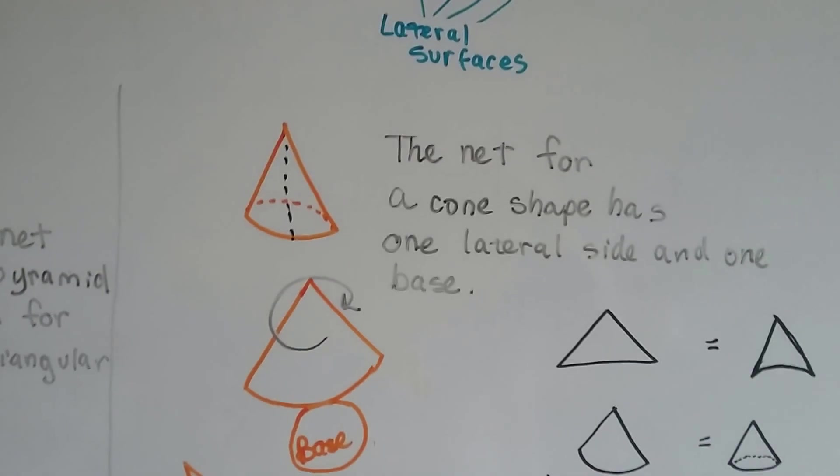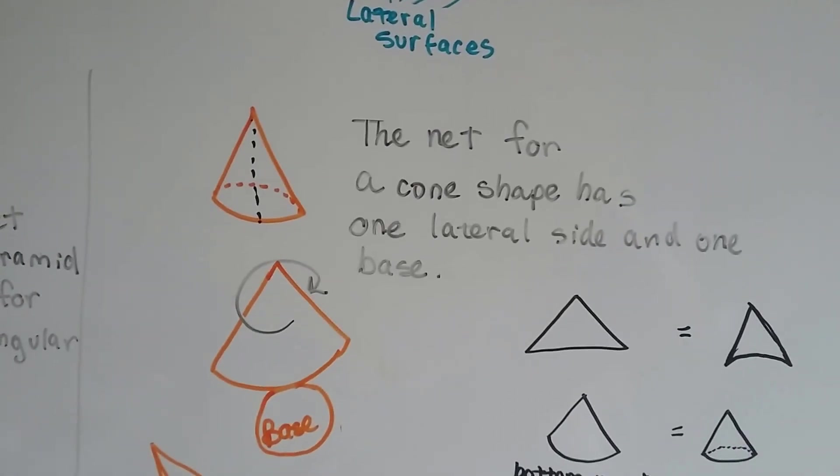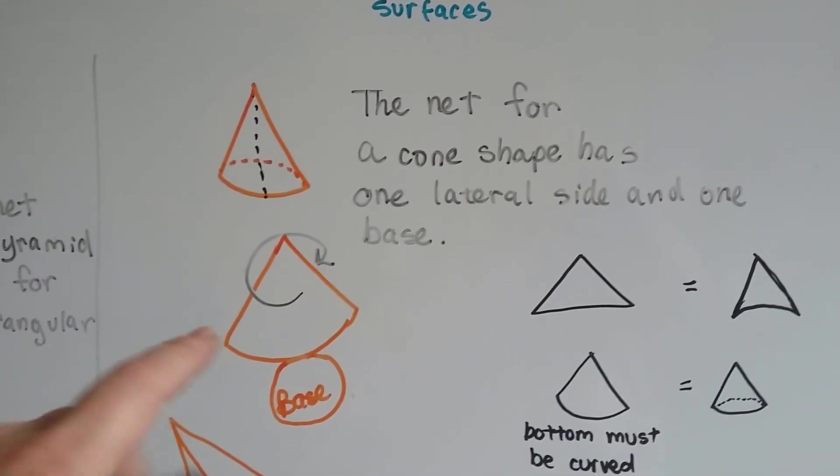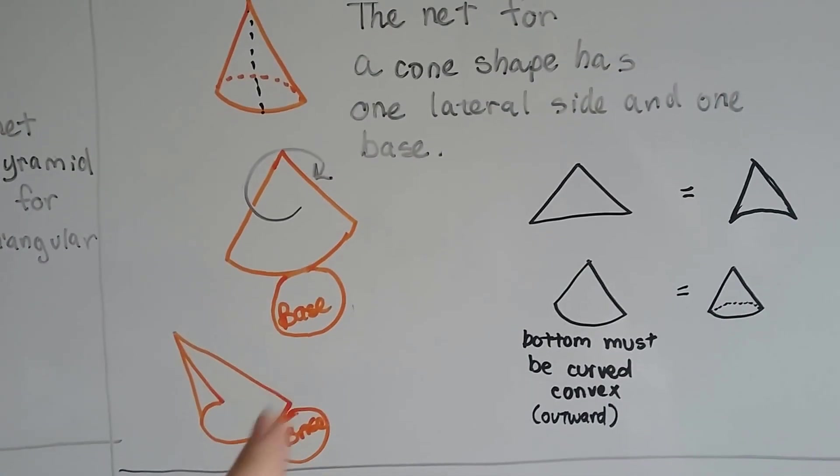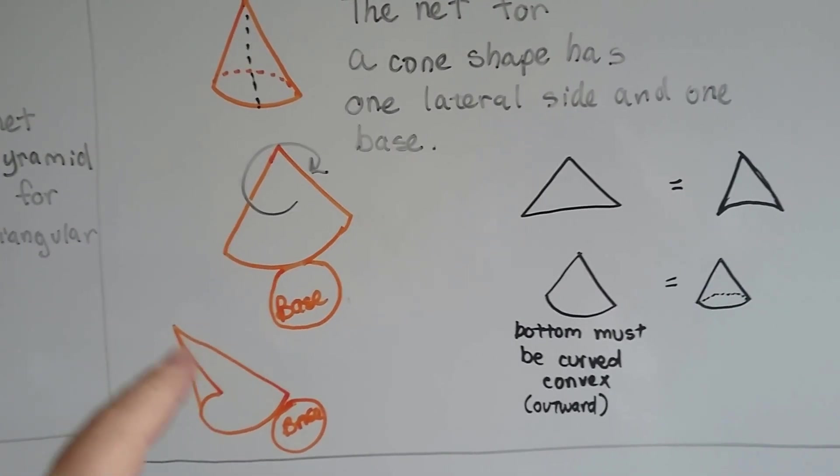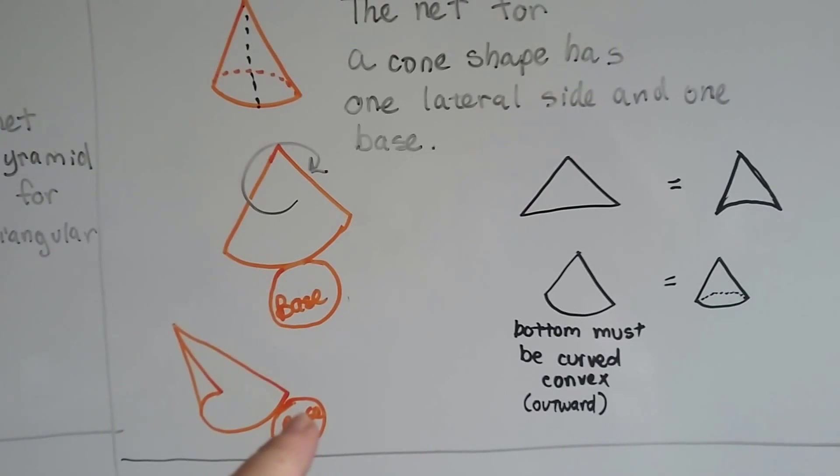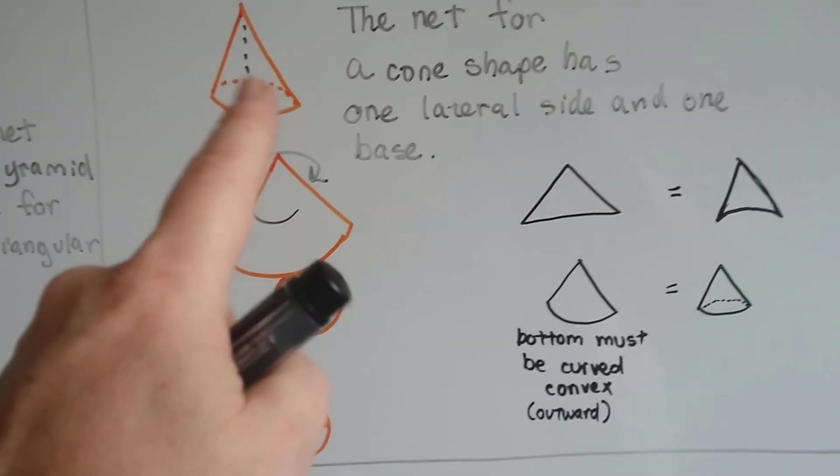The net for a cone shape has one lateral side and one base. It's got a curved bottom, and this wraps around like this. And this side meets this side, and then it's got the circle base that is plugging up the bottom.